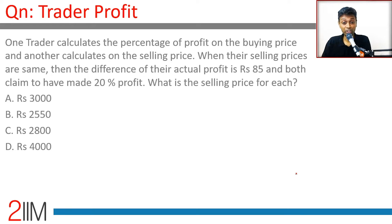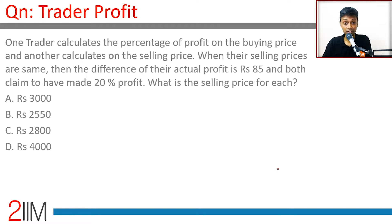One trader calculates the percentage of profit on the buying price and another calculates on the selling price. The buying price is right, the selling price is wrong, and their selling prices are the same. The difference in their actual profit is 85, and both claim to have made 20% profit.